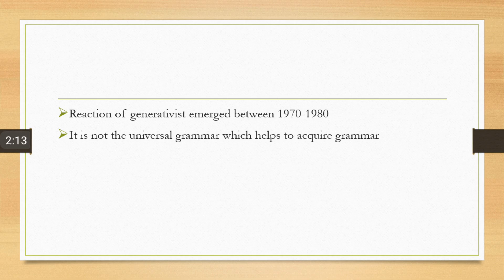The next point: it is not the universal grammar which helps to acquire grammar. According to universal grammar, there is a basic grammar behind acquiring every language and that is an innate ability. But in cognitive processes or cognitivism, it is not the universal grammar. It is the cognitive ability of mind to process language.